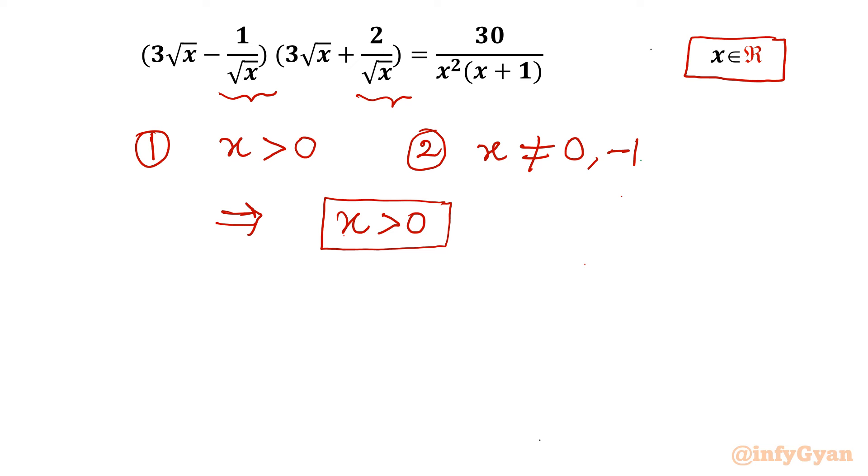Now let us consider our equation and I will begin with LCM. So I can write the very first term which is 3√x - 1/√x as (3x - 1)/√x. Second term, second bracket, I will write (3x + 2)/√x equal to RHS unchanged 30/[x²(x+1)].